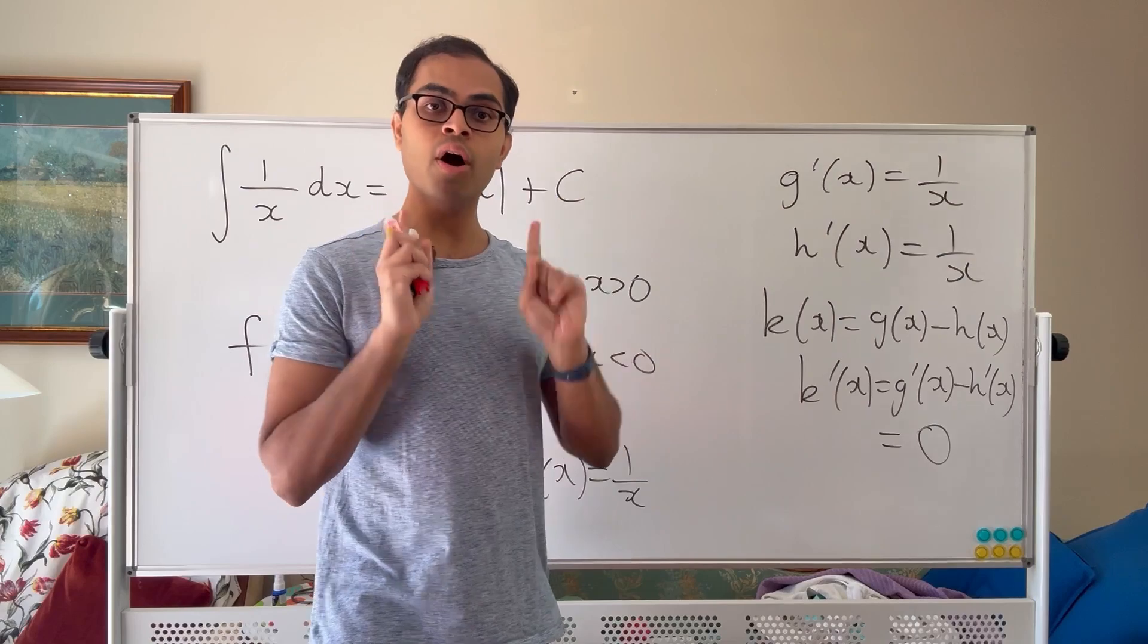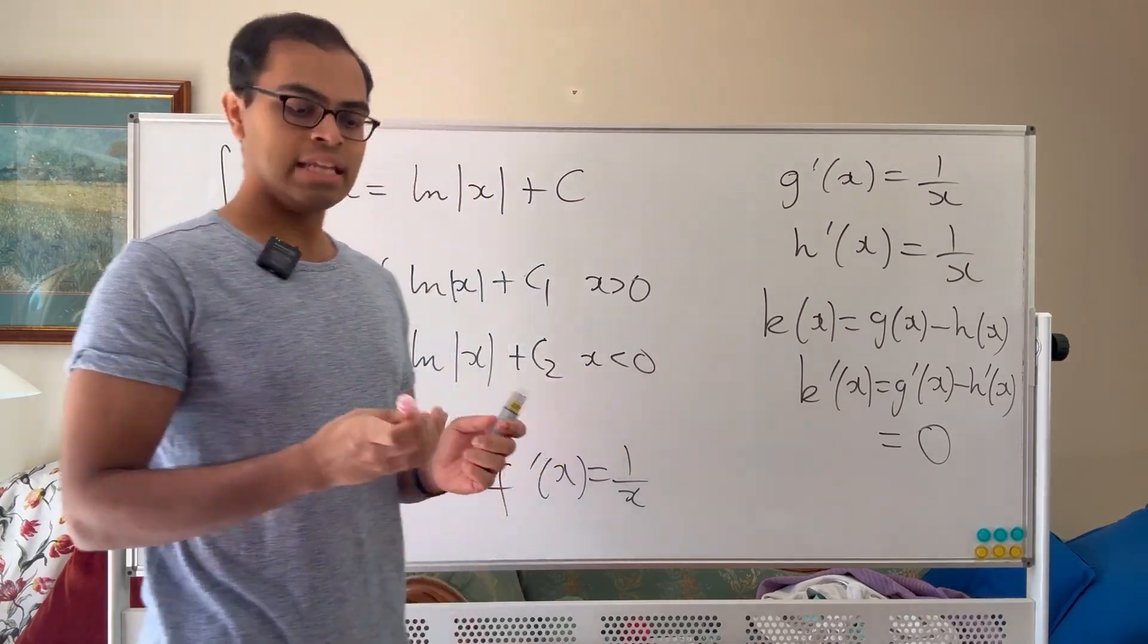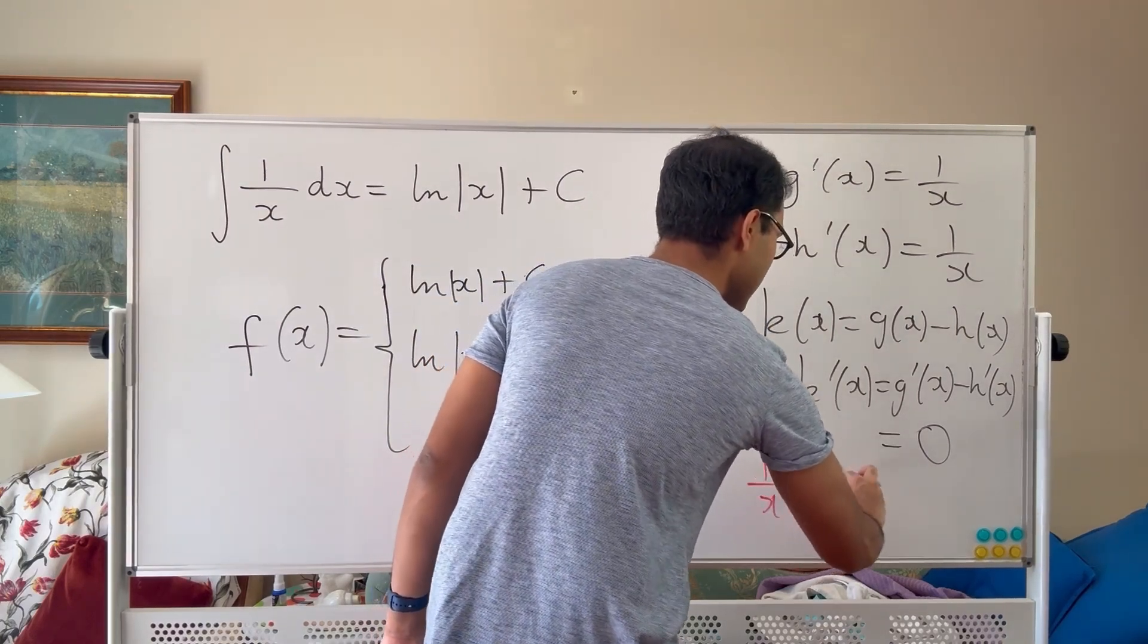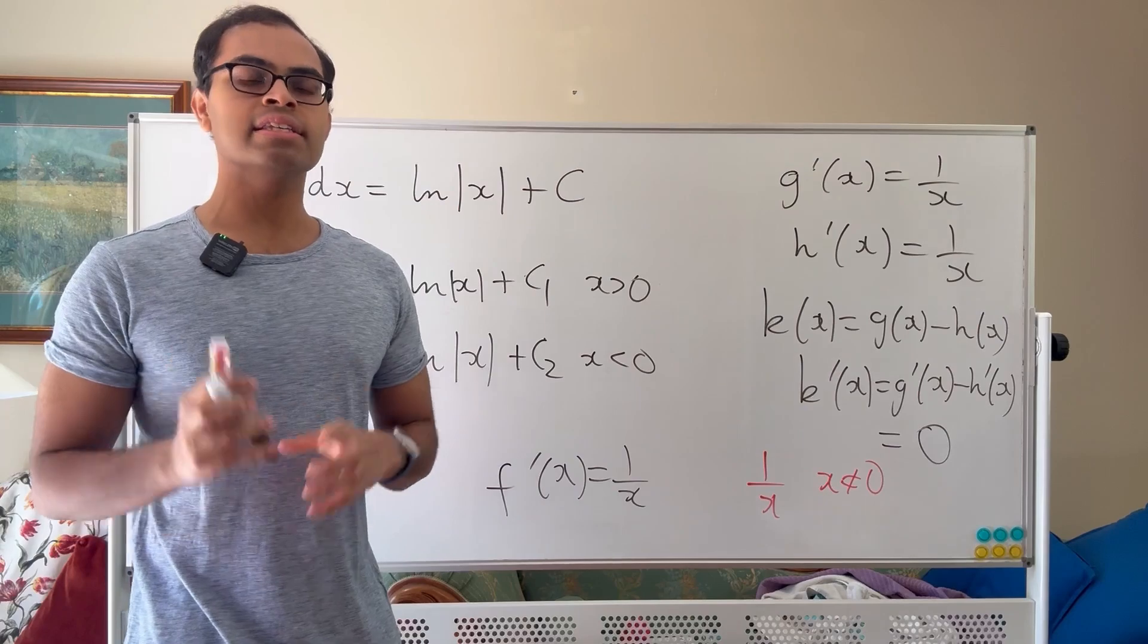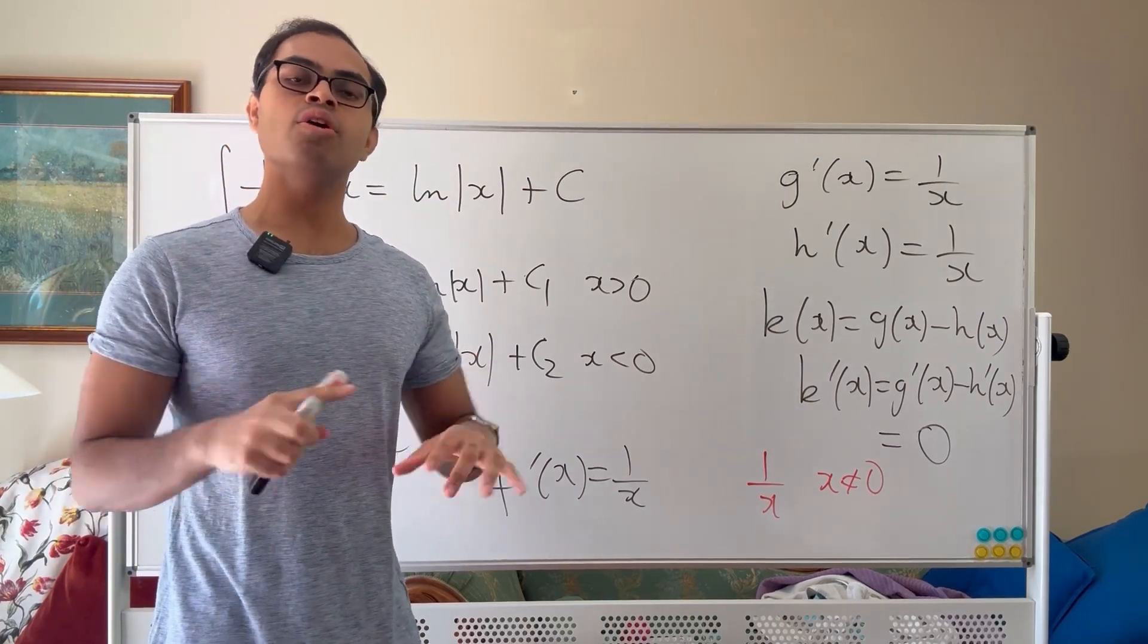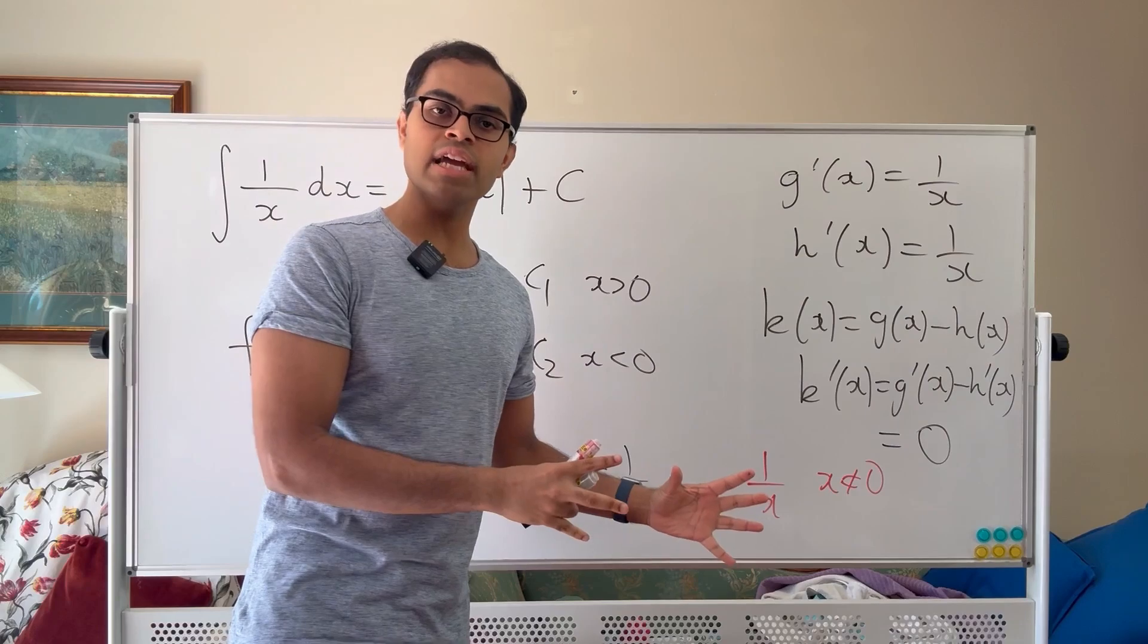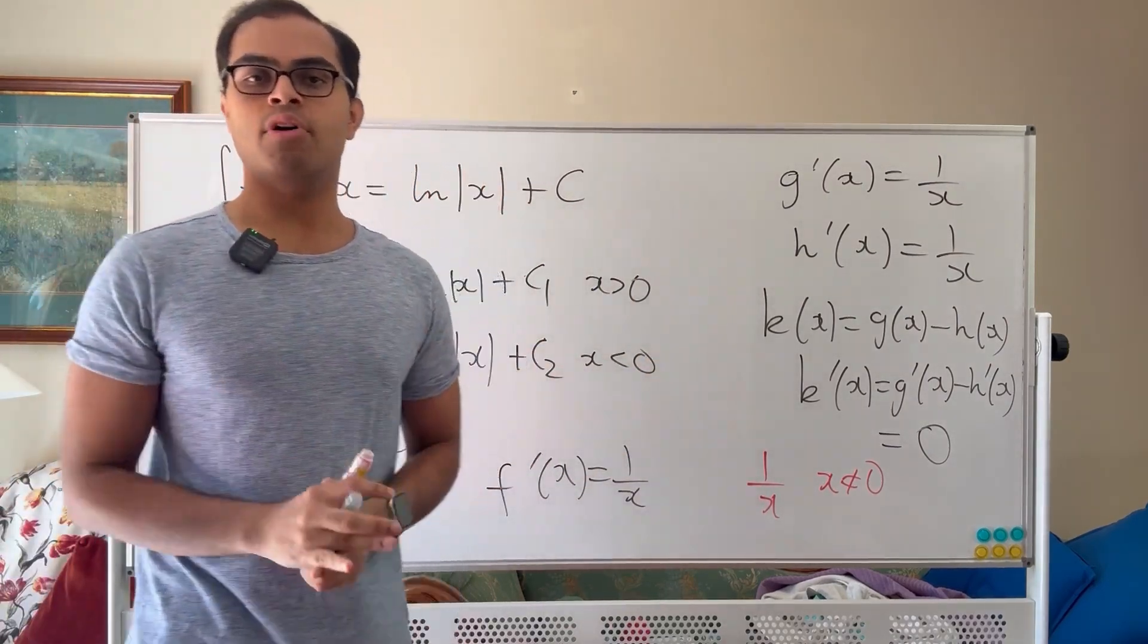The issue here is that the function k of x, because the original function 1 over x is not defined for all numbers, it is a piecewise defined function. 1 over x is defined only for x non-zero. You have negative values of x and positive values of x. A function whose derivative is 0 on all non-zero numbers need not be a constant. It is a constant for negative values and a constant for positive values. They need not be the same constant.